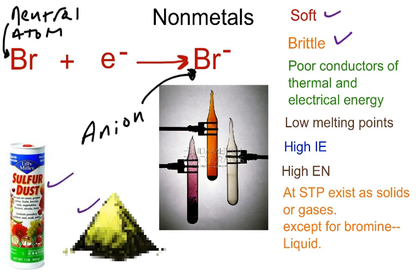For example, sulfur comes with a powdery, dusty form that when you touch it, it crumbles up. So that's the brittle part of it. Non-metals tend to be poor conductors of thermal and electrical energy. Compared to metals, non-metals have low melting points. And they have high ionization and electronegativities.